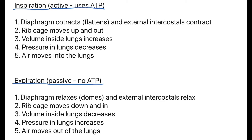Expiration, on the other hand, is passive — there's no ATP used, as the muscles are simply relaxing. The diaphragm relaxes and now domes, and the external intercostals also relax. This causes the rib cage to move back down and in, so volume of the lungs decreases and pressure inside increases, and air moves out of the lungs down the pressure gradient.